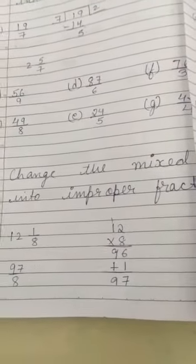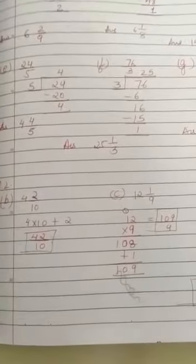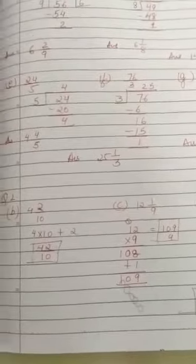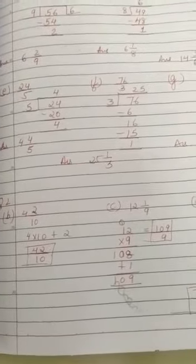The first question was 4 2/10. So 4 tens are 40 plus 2, that is 42. So 42 by 10.